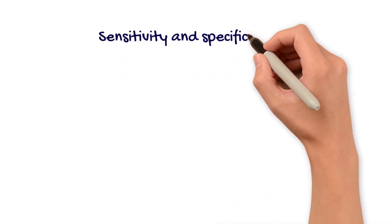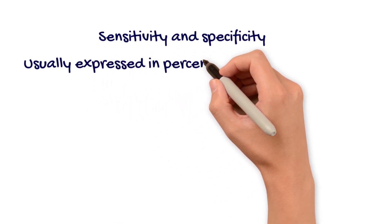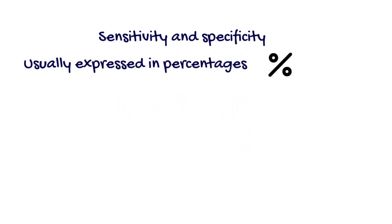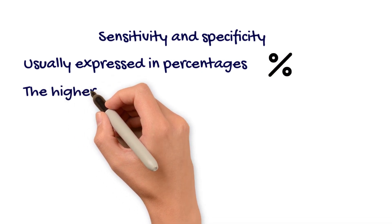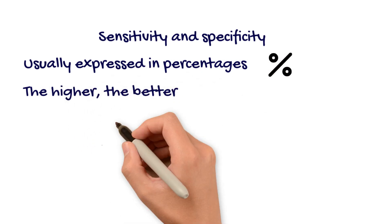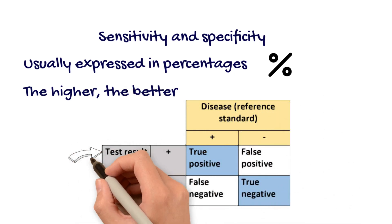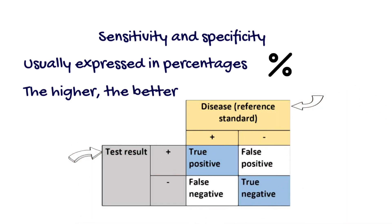Sensitivity and specificity are usually expressed in percentages. The higher the percentage, the better the sensitivity or specificity. They are computed by comparing a new test to a reference standard. A reference standard is the best available measure so far to find the condition and is therefore assumed to give true results.